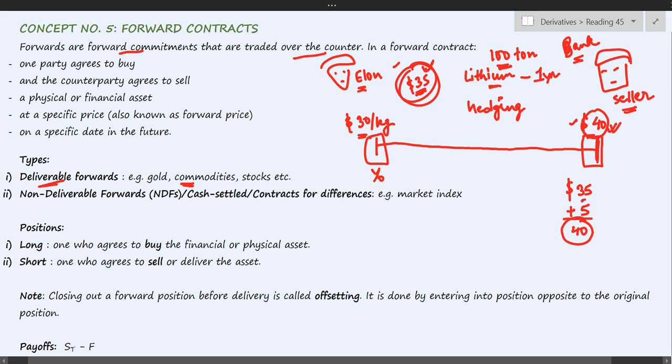So this is the payment that the bank will have to pay to Elon. This payment is computed as the current stock price, that is the current price of the commodity, minus the forward price, that is $40 minus $35.